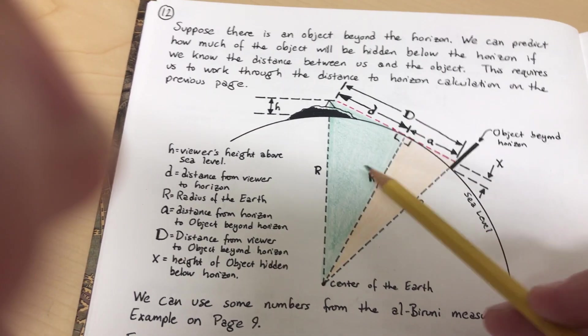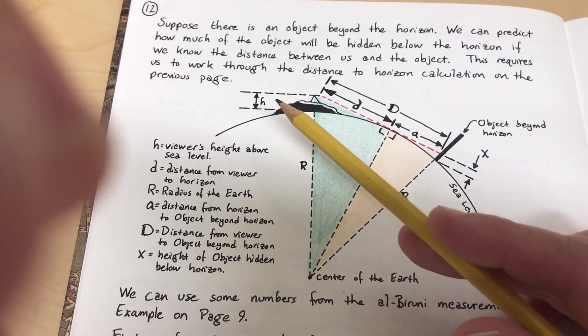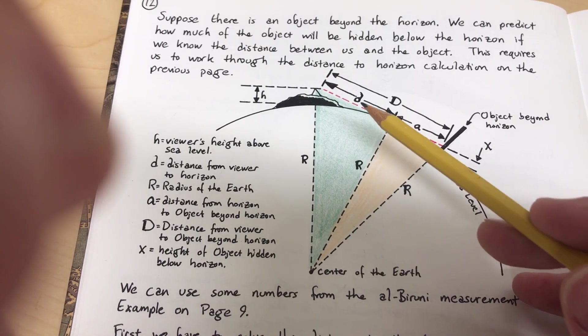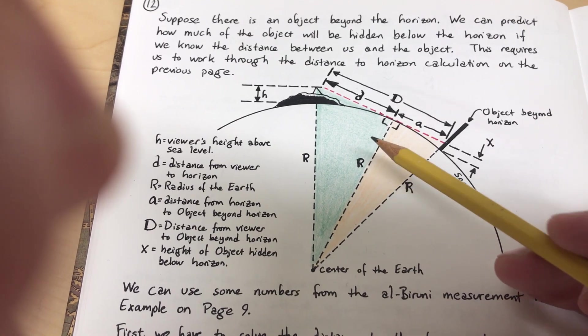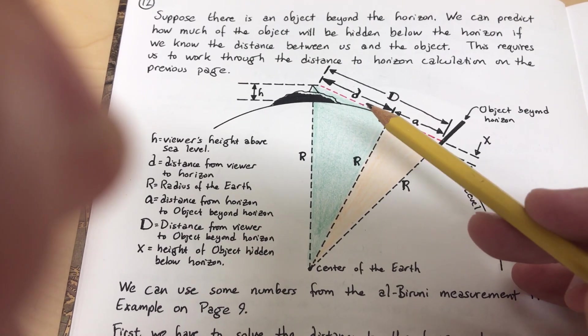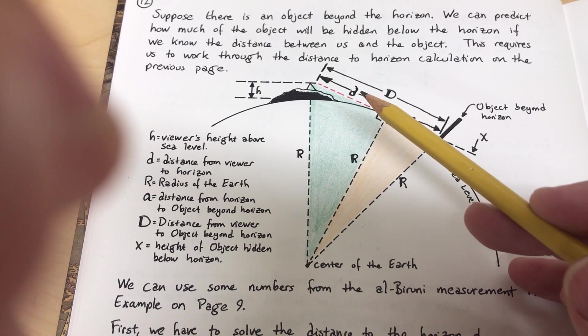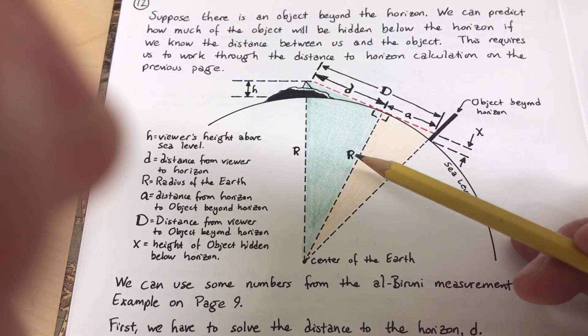And so we know by Pythagoras that (h + r)² = r² + d². Okay, so we manipulate that a little bit because we're trying to solve for this d. And that becomes d = √((r + h)² - r²).